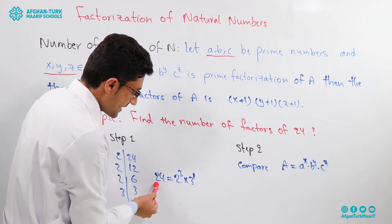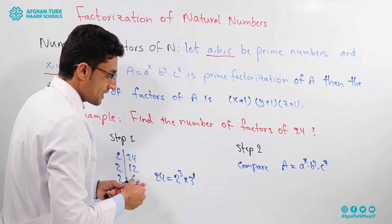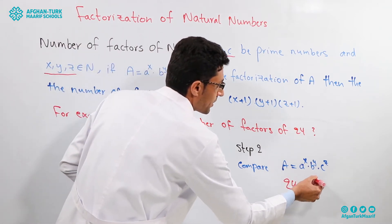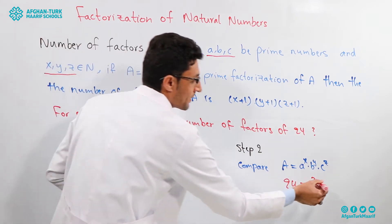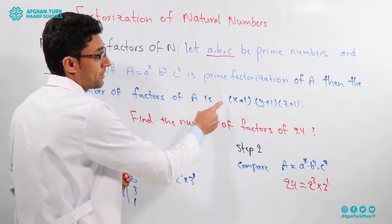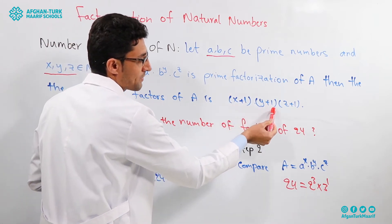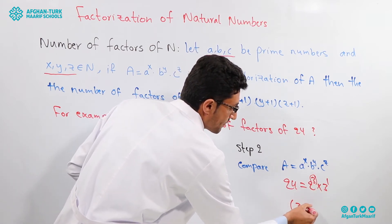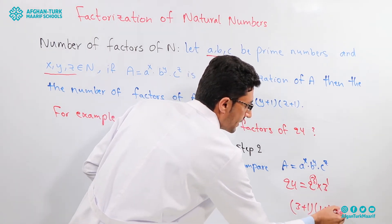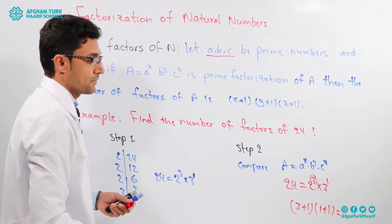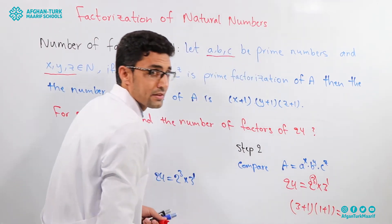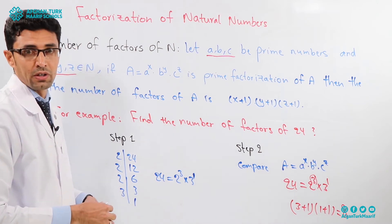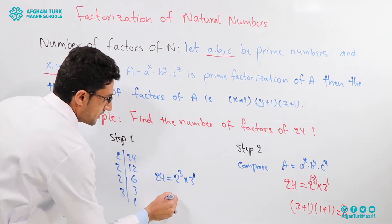Step 2: we compare this with the formula. 24 equals 2 to the power of 3 multiplied by 3 to the power of 1. Our formula is (x + 1)(y + 1). Here x is 3, so 3 + 1 = 4, and y is 1, so 1 + 1 = 2. Then 4 multiplied by 2 equals 8. So 24 has 8 factors.